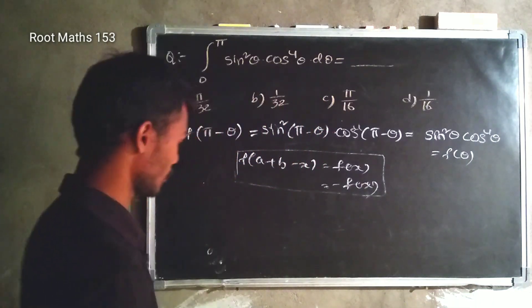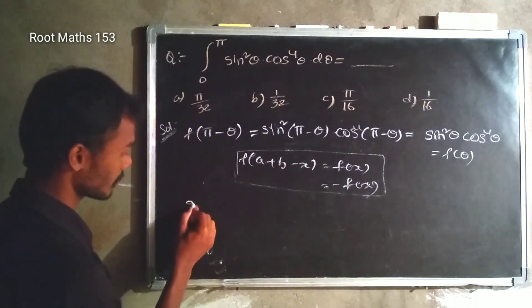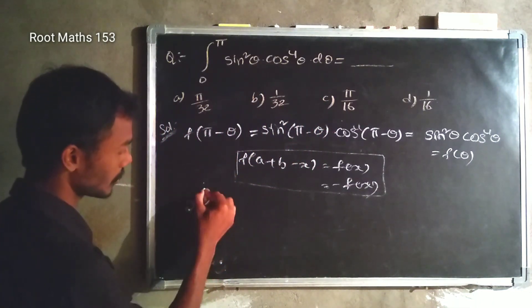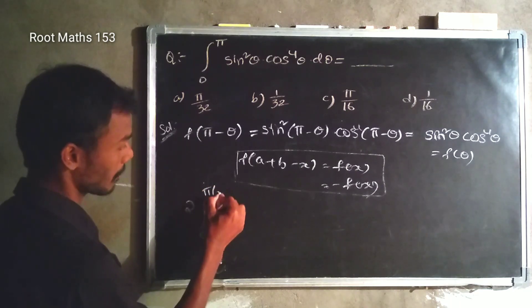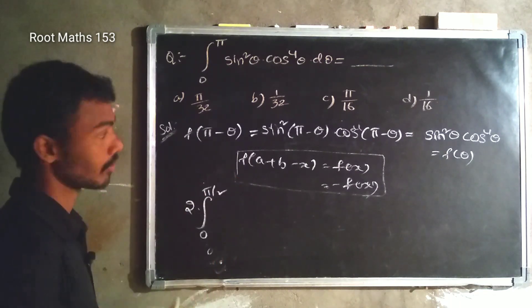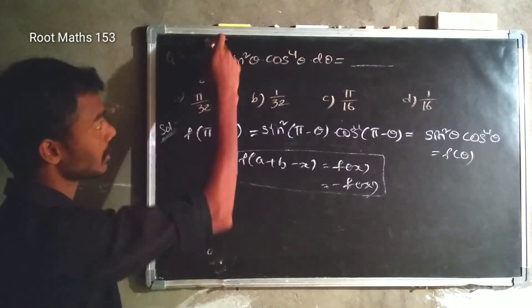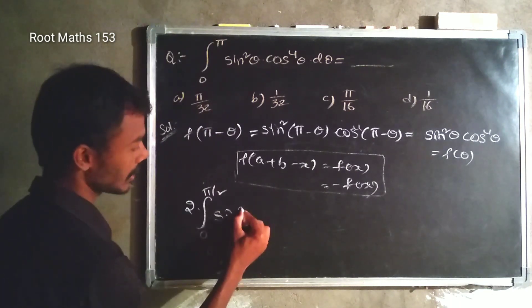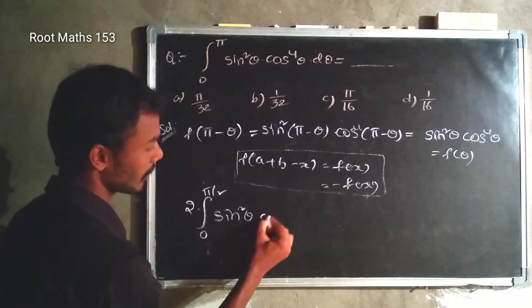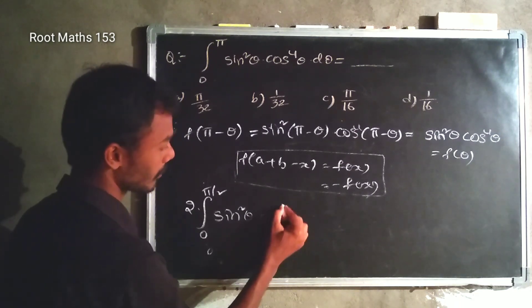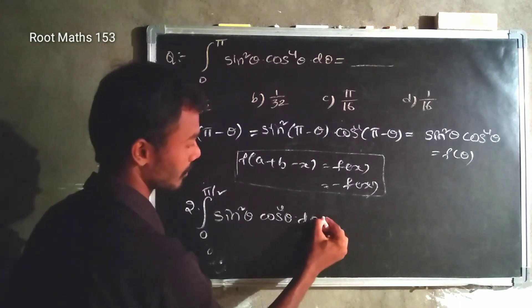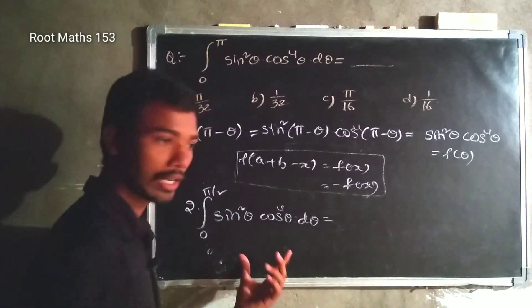So f(pi minus theta) equals f(theta). This means the integrand is the same, and we can write the result as 2 into integration 0 to pi by 2 of sin squared theta into cos power 4 theta d theta.